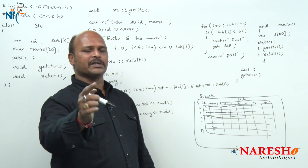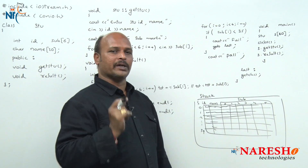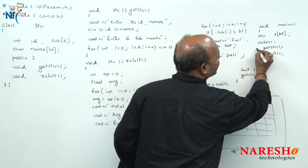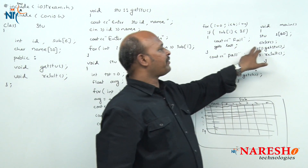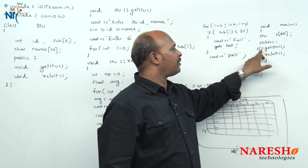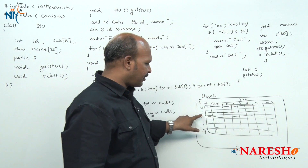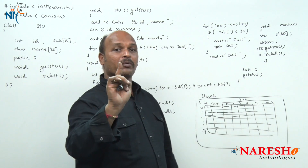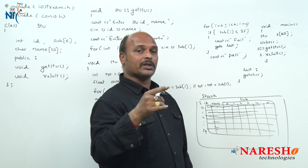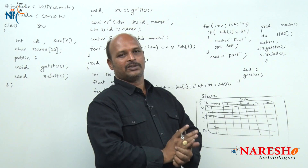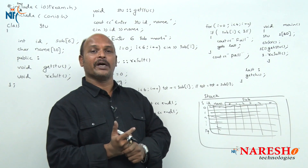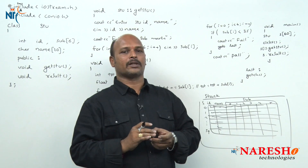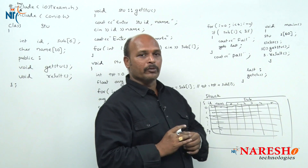In the previous example we needed S1.getStudent, S2.getStudent ... S60.getStudent — 60 individual calls. But this time, one for-loop with S[i].getStudent handles it all. When i is 0 it becomes S[0], then S[1], S[2], and so on — 60 iterations but only one line of code in the program. Program size is reduced, performance is increased, and errors are minimized. That is why we declare objects using arrays.